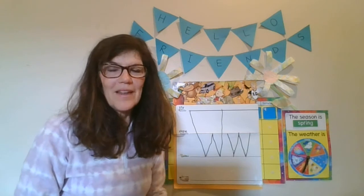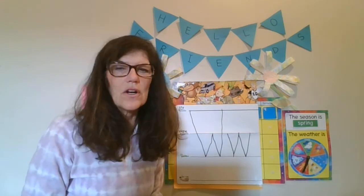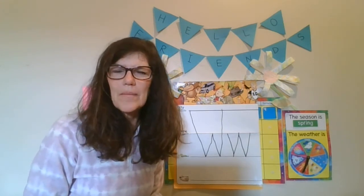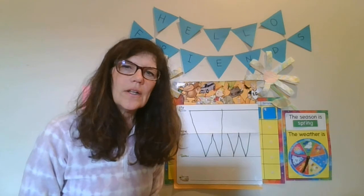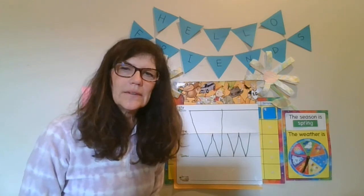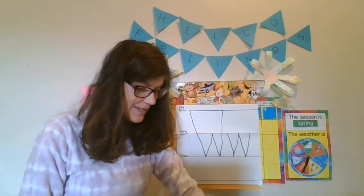Another animal. This animal lives in the Arctic, but it also lives other places — in the wilderness, in the woods. It's a wild animal. Kind of looks like a dog, but it lives in the wild. Can you guess? This is a wolf. W for wolf.